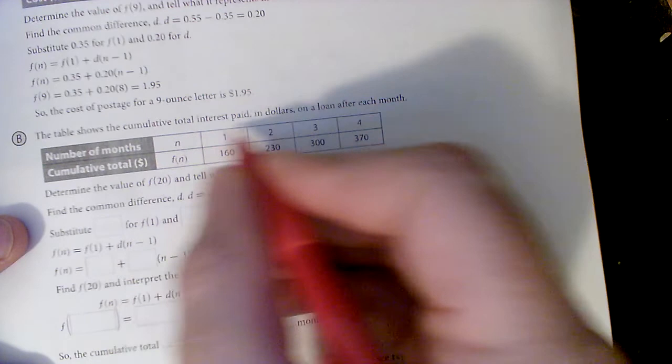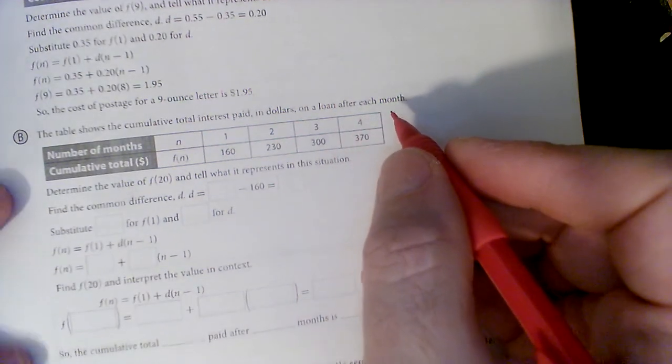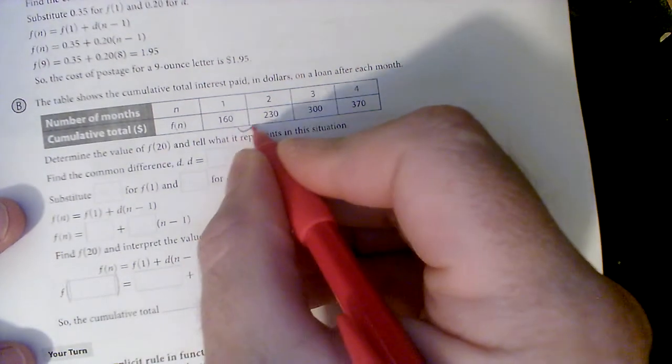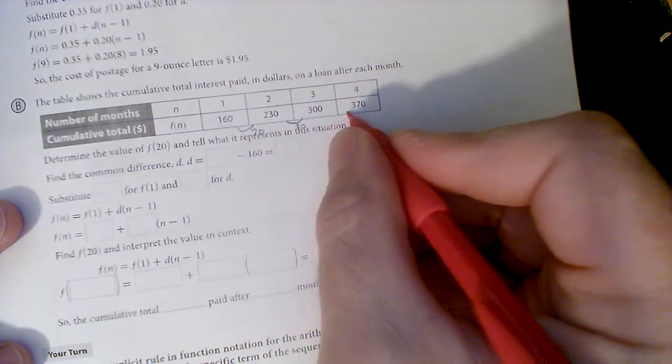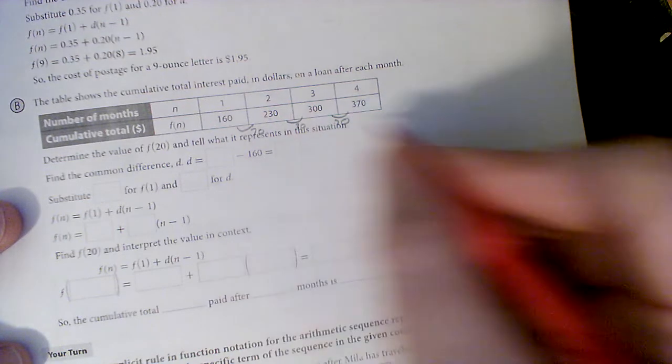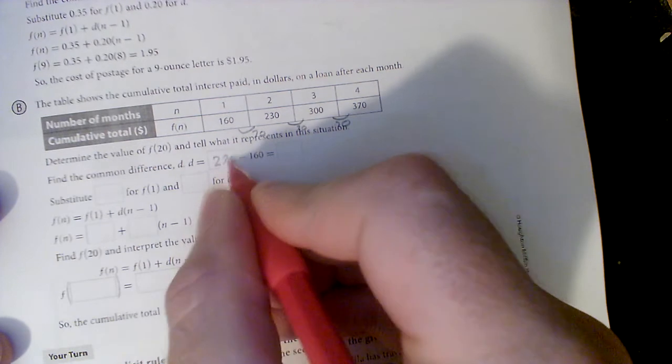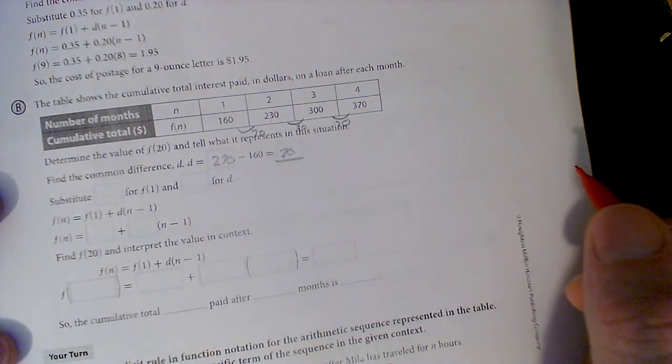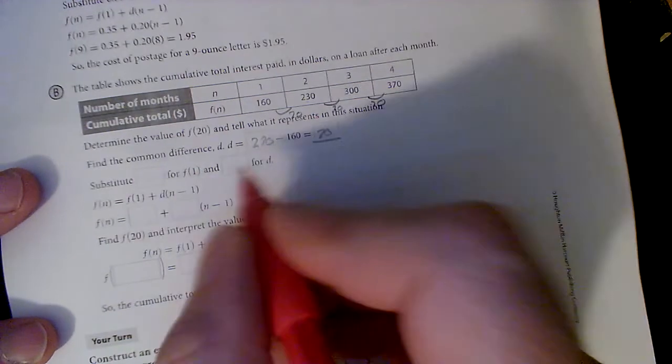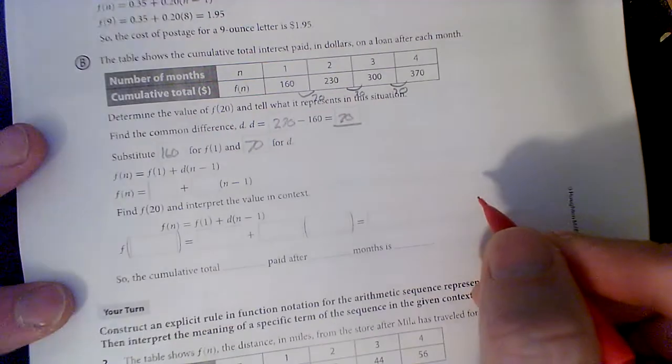Alright. The table shows the cumulative total interest paid in dollars on a loan after each month. Alright. Determine the value. Let's make sure it's the same. So if I go this way, 230 minus 160 is 70. It is. We have a common difference. They're growing by the same. So we know, in fact, it is arithmetic. I'll do that 230 right here. Minus 160 is 70 dollars. Common difference is 70 dollars. And so my F1 is gonna be 160. And my difference is gonna be 70.